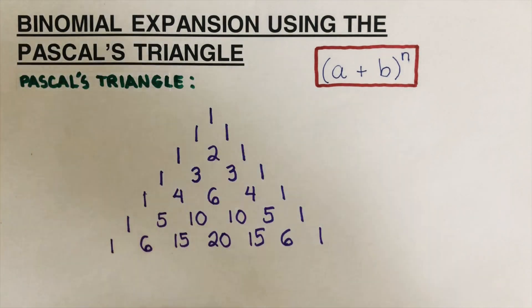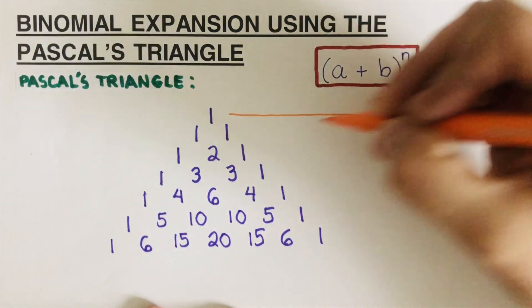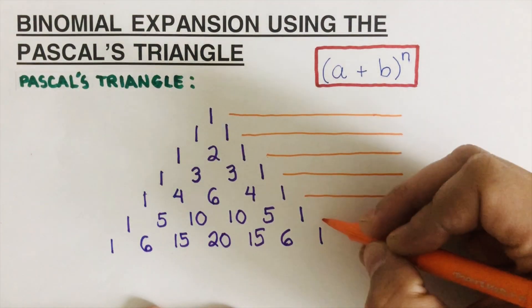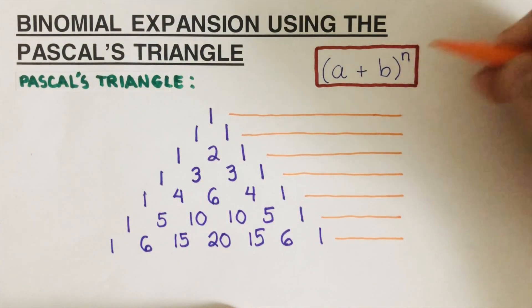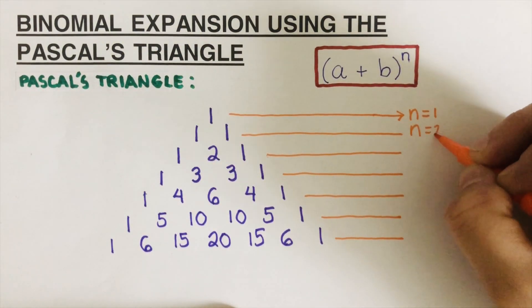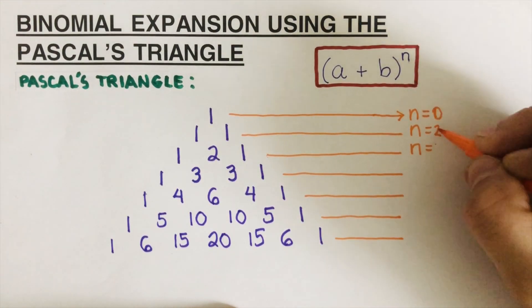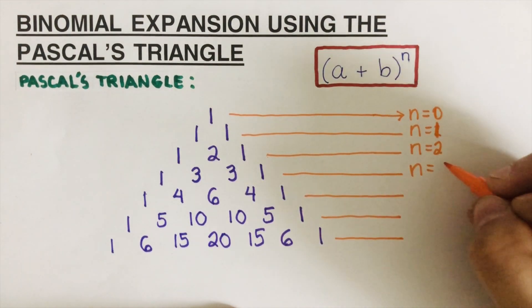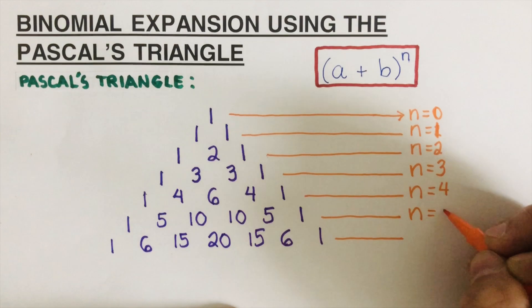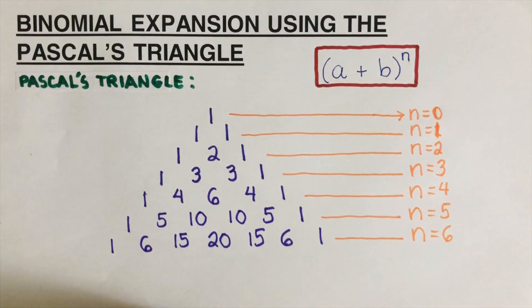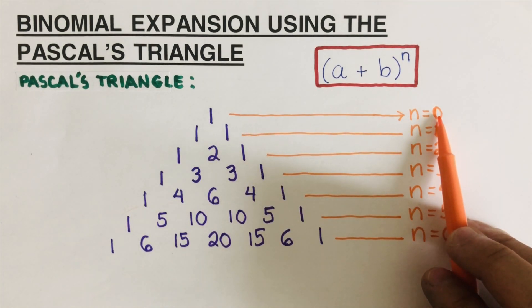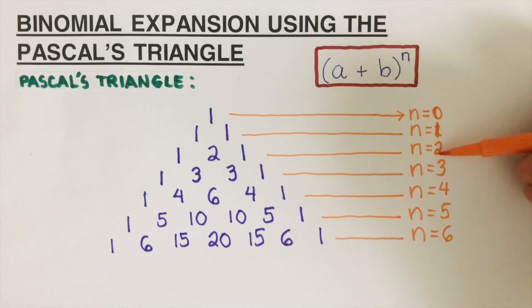Now let's define where our exponent n fits in. We use a specific row depending on what n is. The top row (just one) corresponds to n equals 0, then n equals 1, n equals 2, n equals 3, n equals 4, n equals 5, and n equals 6. So if the exponent is 5, we use the row: one, five, ten, ten, five, one.